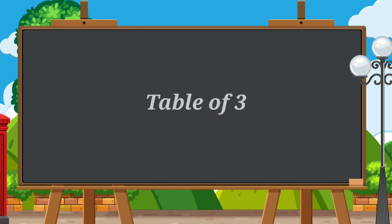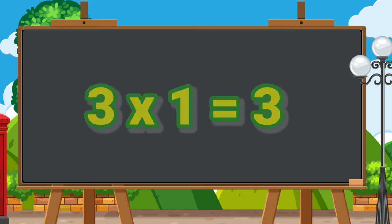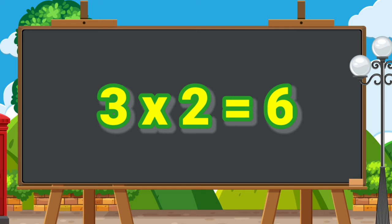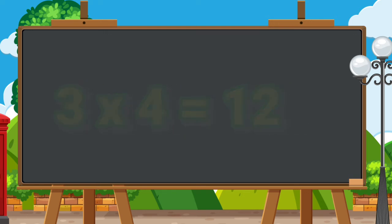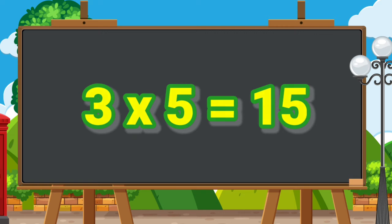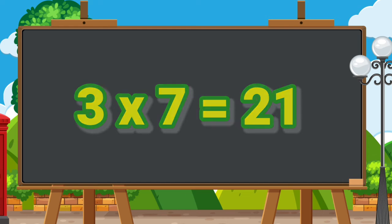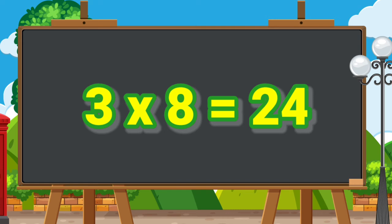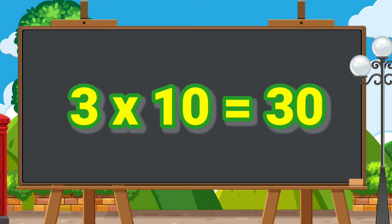3 ones are 3. 3 twos are 6. 3 threes are 9. 3 fours are 12. 3 fives are 15. 3 sixes are 18. 3 sevens are 21. 3 eights are 24. 3 nines are 27. 3 tens are 30.